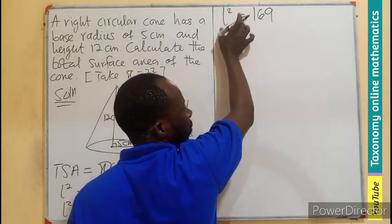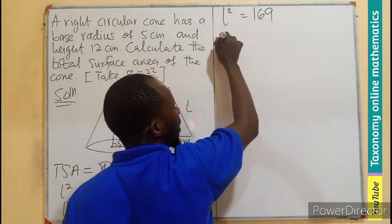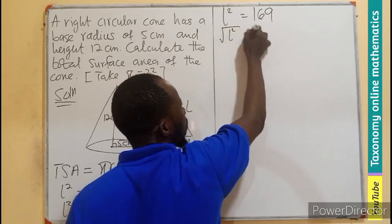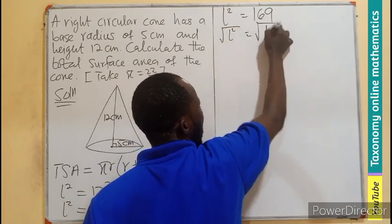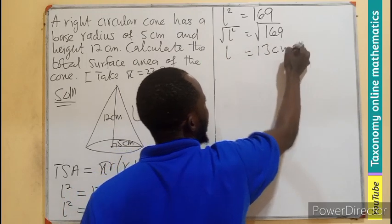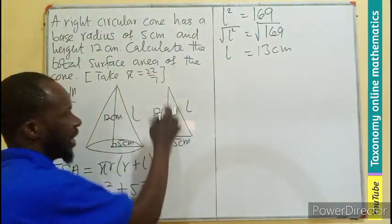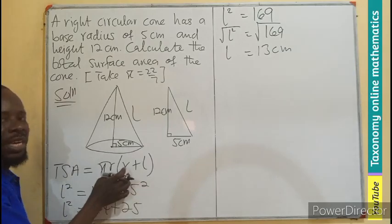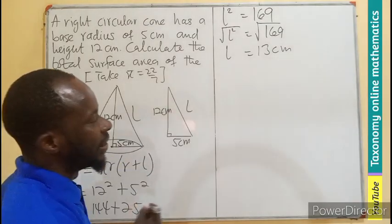So this is going to be this side. So squaring both sides, or finding the square root of both sides, give us L squared equals 169. So this will give us 13 centimeters. Meaning, the slant height that we need in this formula is 13 centimeters.